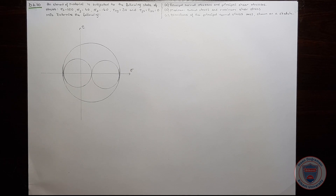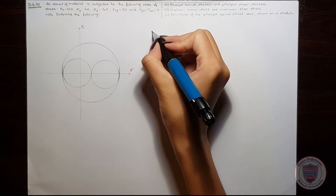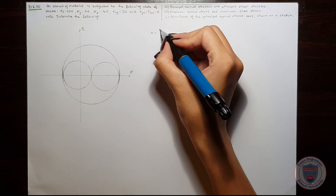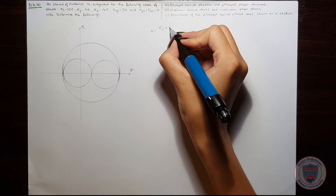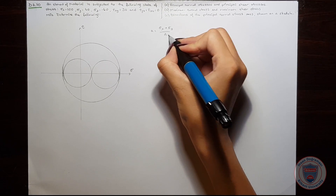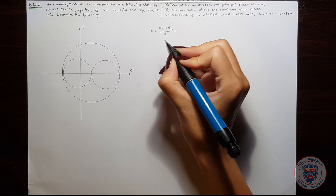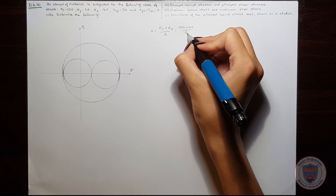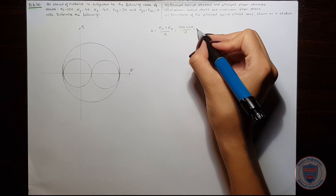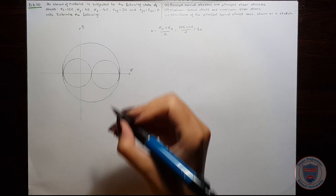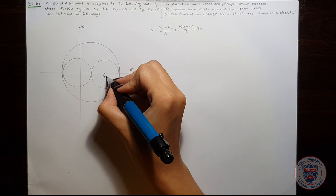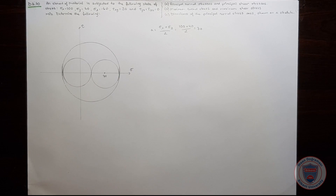We will start by finding the center of the circle. Let's call the center A. It will be equal to sigma x plus sigma y over 2, which is 100 plus 40 over 2, and it is equal to 70. So the center of the circle is 70.